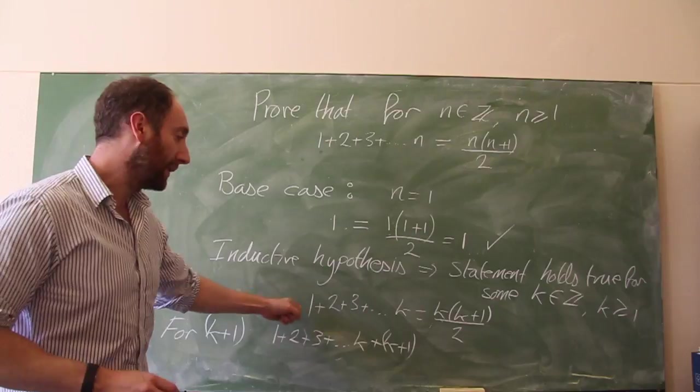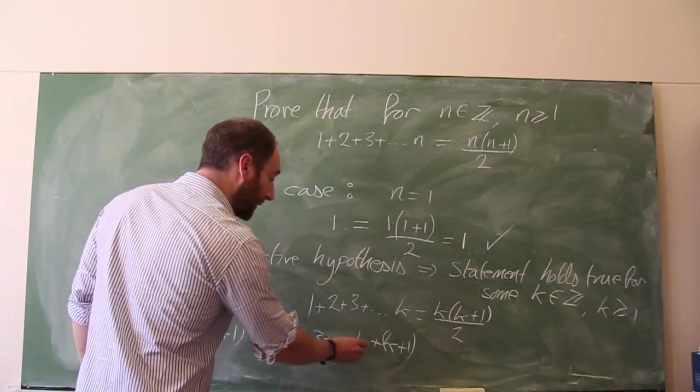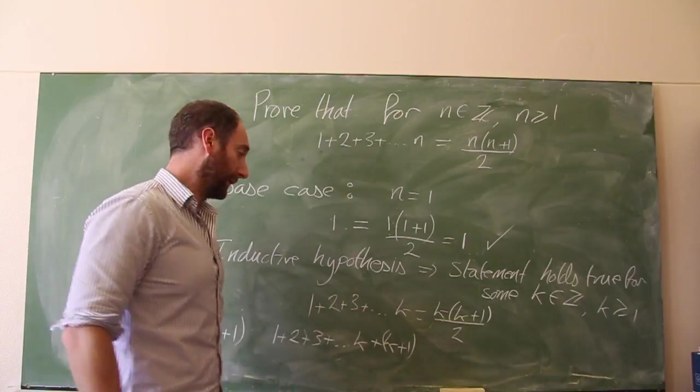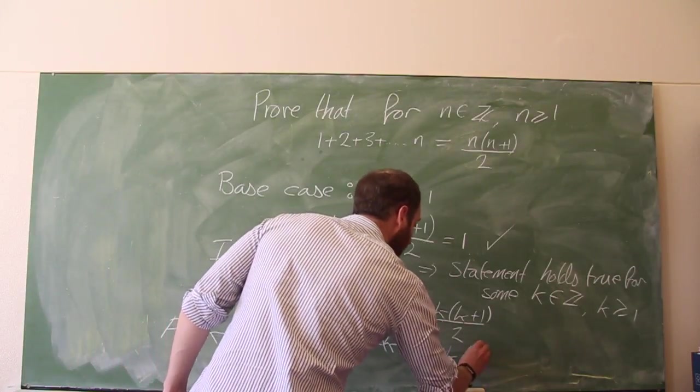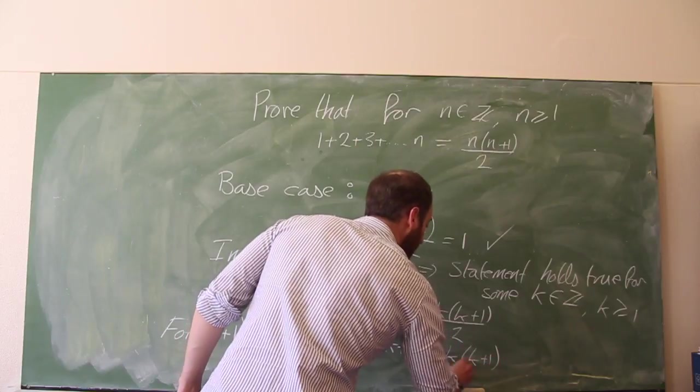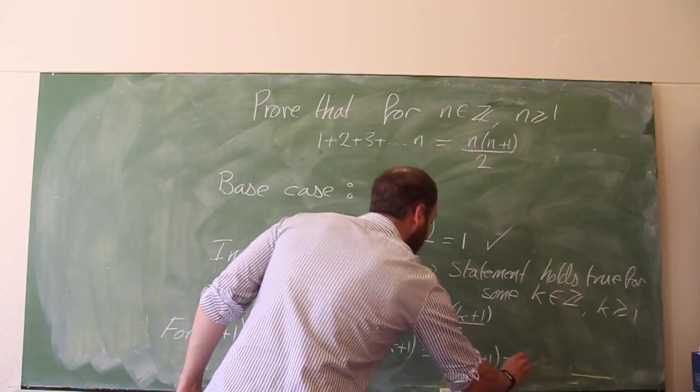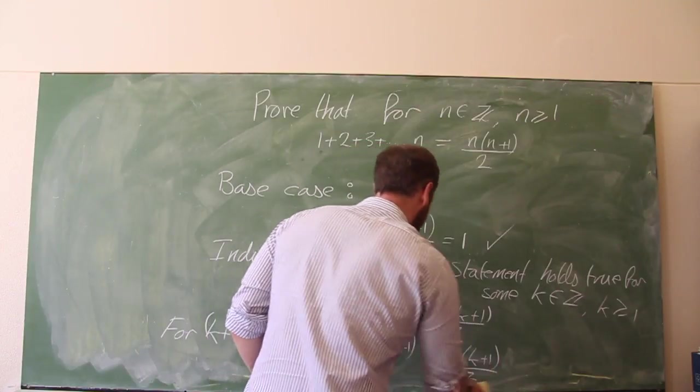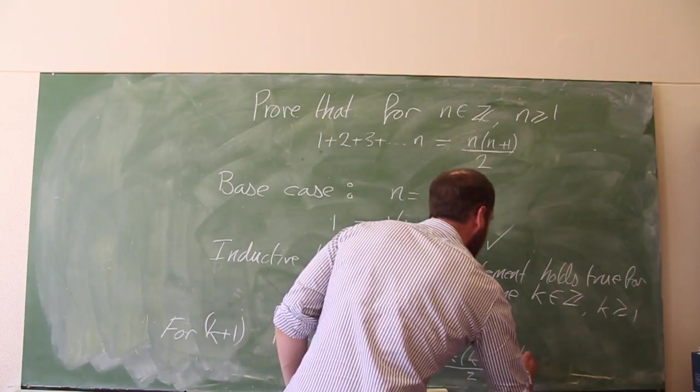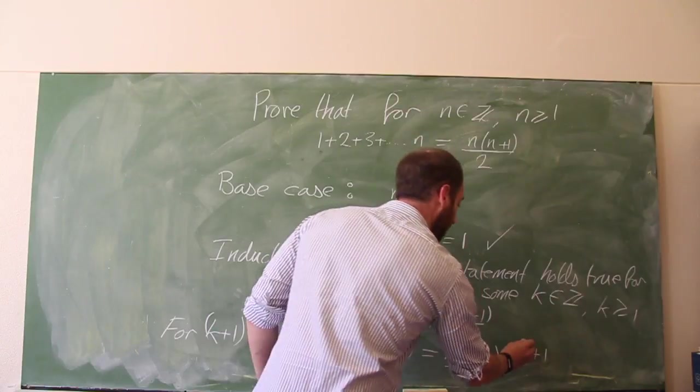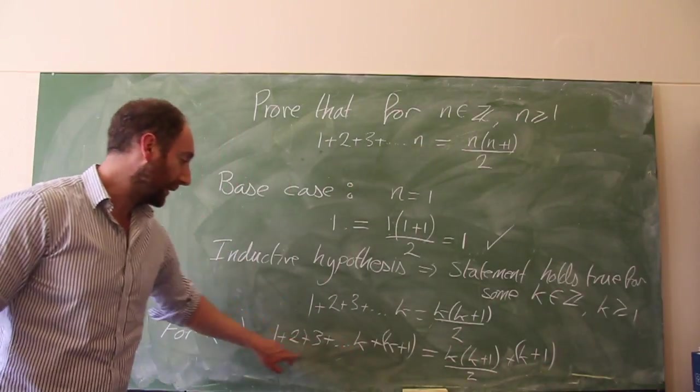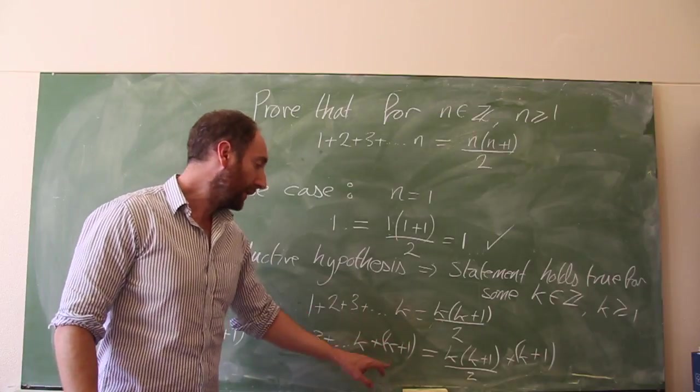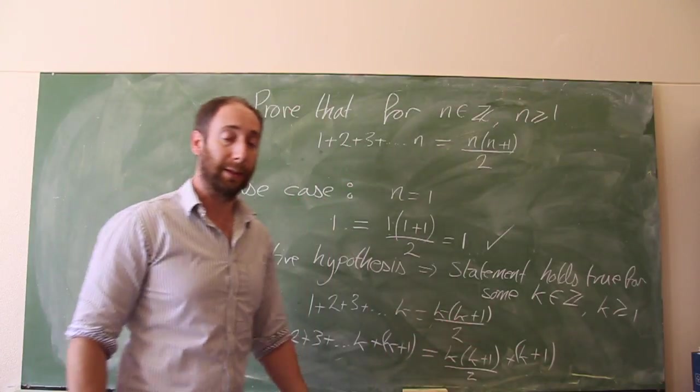Now comes the inductive step. Now we use this, and we say that from 1 to k is the same as this, and we assume that this is true. So we can write that this is k(k plus 1) divided by 2, plus k plus 1. We've done there. We've just taken this part here, which we said is k(k plus 1) over 2, and we've added on k plus 1 onto it.